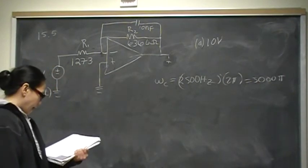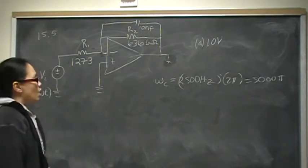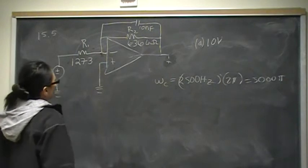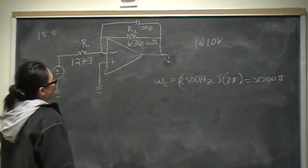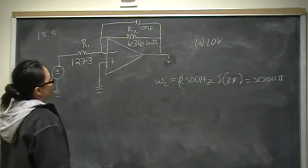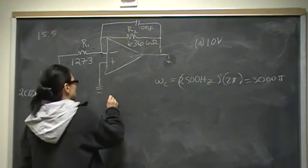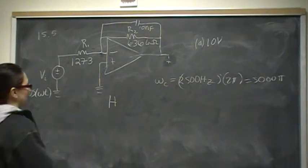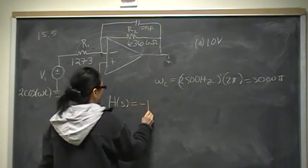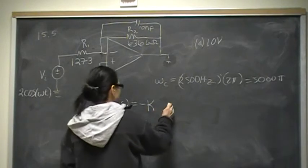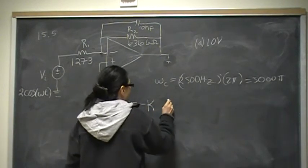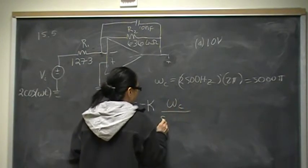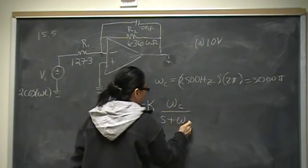How do we find the output voltage there? We could use KCL, but that's a lot of hard work. Since we're lazy and very clever, we're going to use the transfer function. The transfer function for a low-pass filter is H of S equals negative K, where K is the gain, times the cutoff frequency, divided by S plus the cutoff frequency.